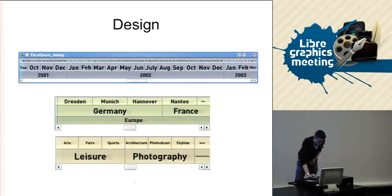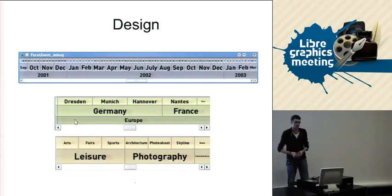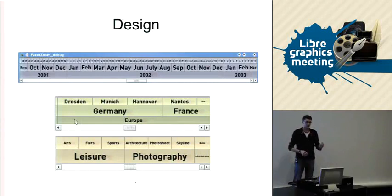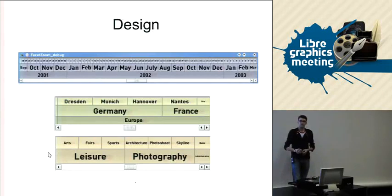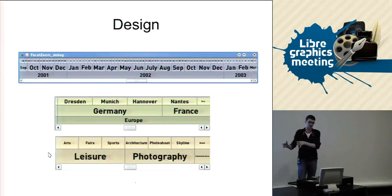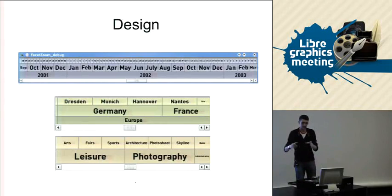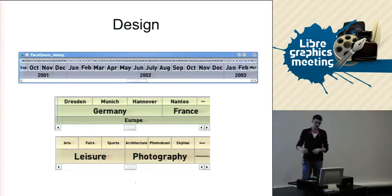The next example down below is one for location — for geographical metadata — where we have Europe, and then in there we have Germany and France, for example. Inside Germany you would have different cities, same goes for France and so on. The third example is now here as an instance of the widget, for different classifications. So we have leisure, arts, fairs, sports. And then there might be a different one — if you're a professional photographer, for example — you would have architecture, photo shootings, skyline photos, and so on.